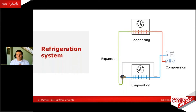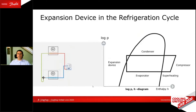Let's look at the refrigeration system. You all know how that looks like. We have a compressor, condenser, we have expansion valve, and we have an evaporator. And if we draw that system into a log pH diagram, you'll find that we have this diagram here.